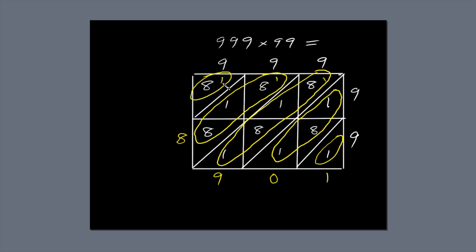Finally, 1 plus 8 is 9. So write 9 next to the diagonal. Now we just read off the answer: 9, 8, 9, 0, 1. 999 times 99 equals 98,901.